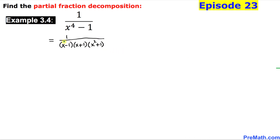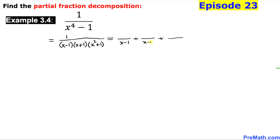We now have two non-repeating linear factors in the denominator and one irreducible quadratic factor. So we are going to do the partial fraction decomposition, putting down three fractions separated by plus signs, with denominators x minus 1, x plus 1, and x² plus 1.